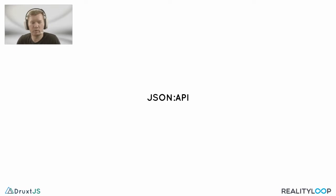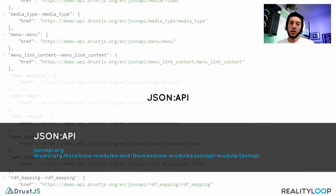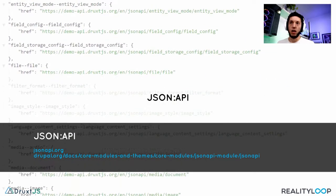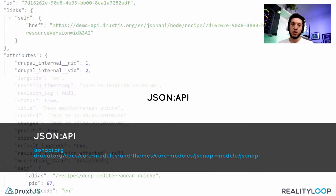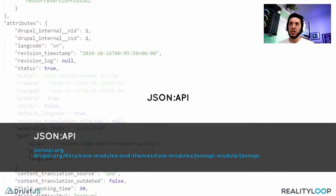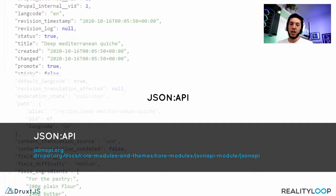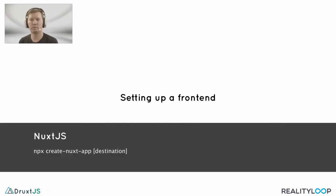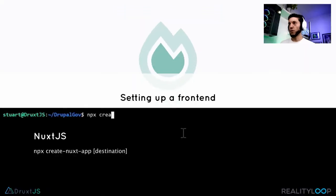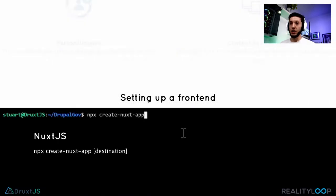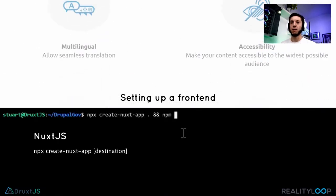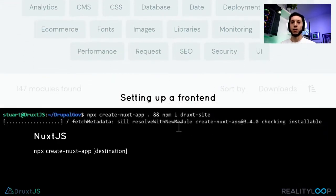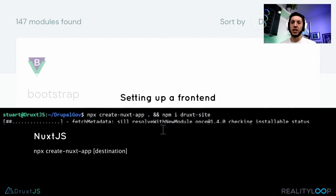What does the JSON API module give us? The JSON API module provides a way for a front-end or a JSON API client to consume the site's content as well as some configuration in a standardized format. What do we have to do to start on our front-end? For the front-end, we're going to use Nuxt. Much like Drupal is a PHP framework for your backend, Nuxt provides you with all the things that you want for a modern Vue.js site.